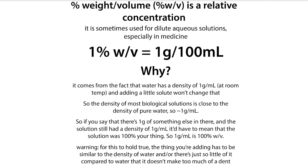If we dissolve one gram of salt in there and still say our density is about a gram per milliliter, then in 100 milliliters we would have 100 grams, but one gram of that would be coming from our sodium chloride. Therefore it would be about a 1% weight-weight percentage, even though what we measured out was grams and volume — grams and milliliters.